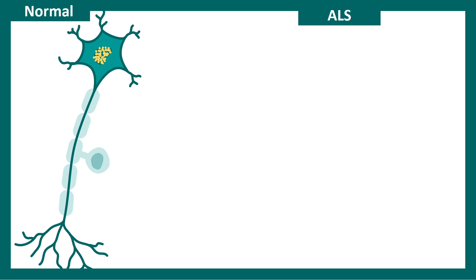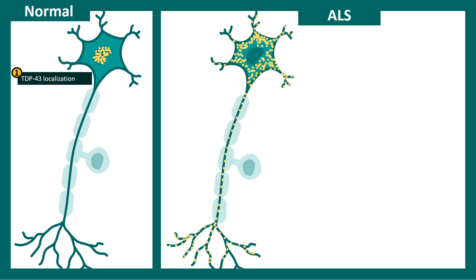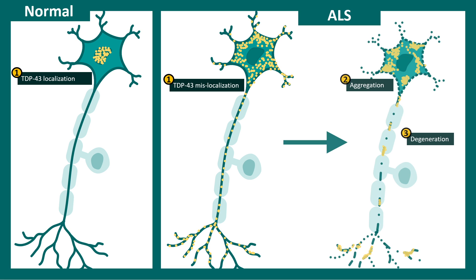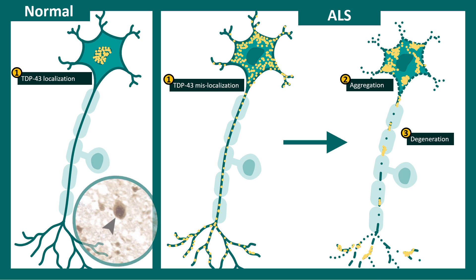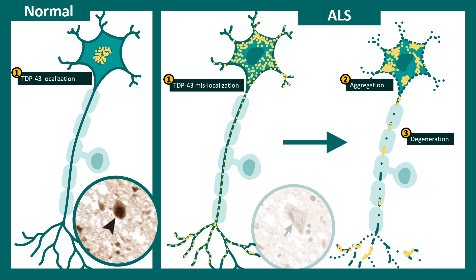One peculiar factor about ALS is the localization of the protein TDP-43. It is generally localized in the nucleus, but in ALS its localization is altered — it is mislocalized to the cytoplasm where it aggregates, and this is associated with neuronal degeneration. On an immunohistochemistry slide, TDP-43 is enriched in the nucleus in normal cells, whereas in ALS patients it is found outside the nucleus forming aggregates, as indicated by the arrows.